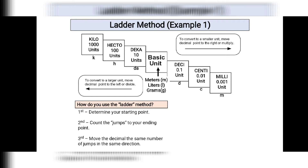Then you count how many jumps to the ending point. To determine the direction of the jump: if you are converting to a smaller unit, for example from kilo going to deka, you simply move the decimal point going to the right.